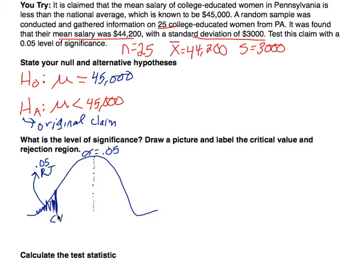How do we find this critical value? We're looking for a t-value — not a z-score — because we don't know the population standard deviation, so we use the t-distribution. We're looking for a t-score with 0.05 to the left. The degrees of freedom is one less than our sample size: our sample size is 25, so degrees of freedom = 24.